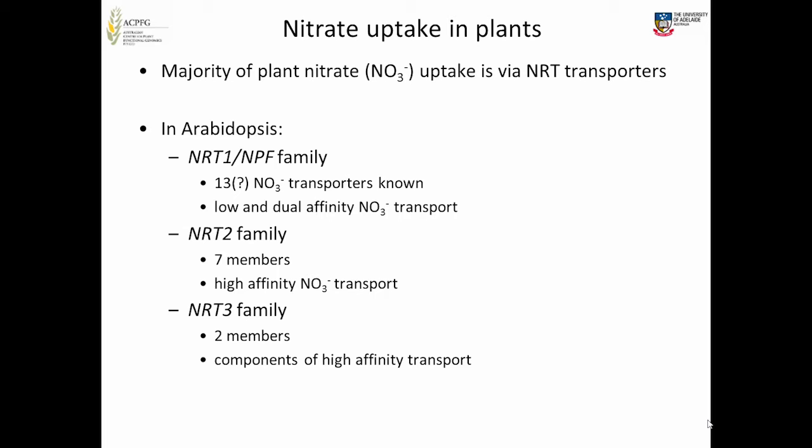There are three families of NRT transporters involved. The NRT1, now renamed the NPF family, has about 13 transporters that transport nitrate — they're low and dual affinity transporters. NRT1.1 in particular is a dual affinity transporter that changes from low to high affinity based on a phosphorylation event. That one is also thought to be a transceptor — sensing nitrate as well as transporting it, and the sensing may actually be the more important role.